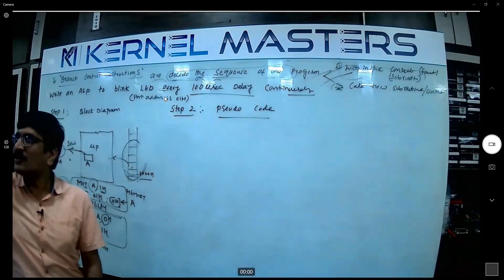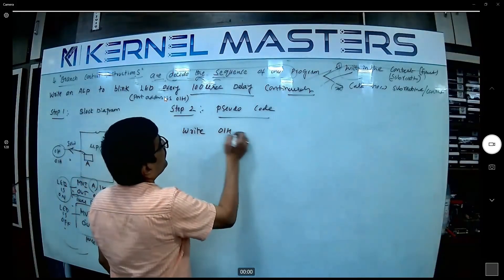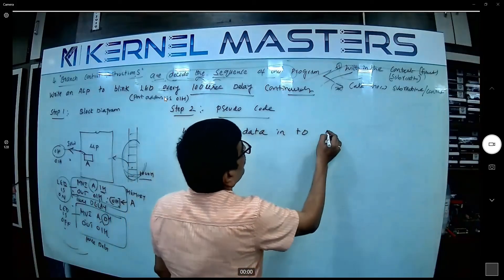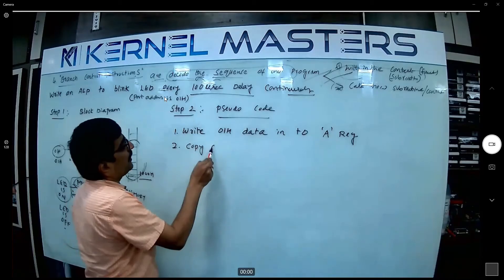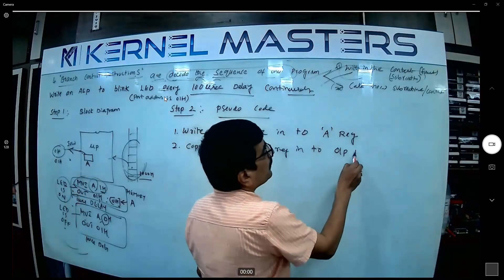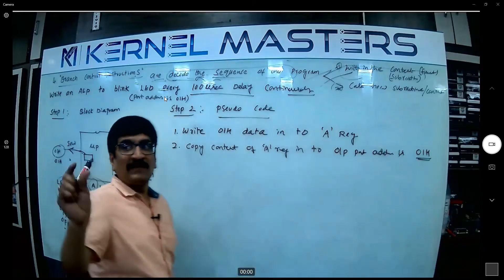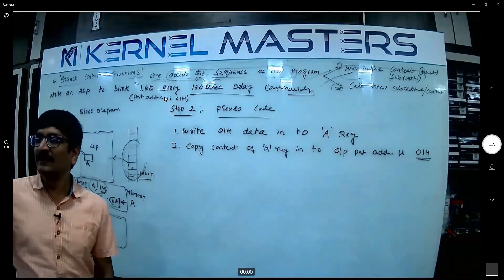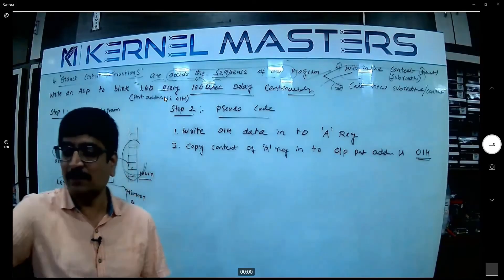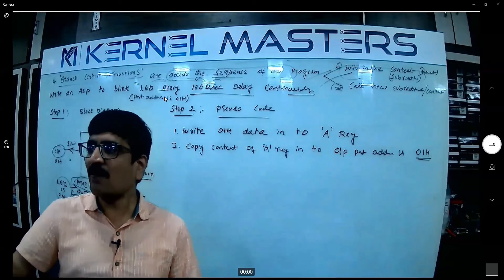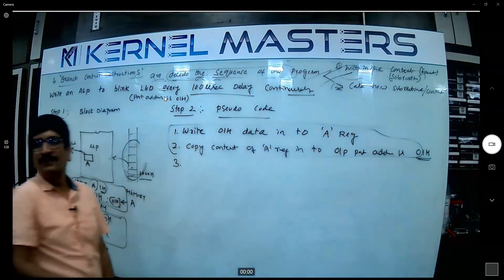Now the jump instruction — unconditional instruction. First, write 01H data into the A register. Next, copy the content of the A register into the output port. The output port address is 01H — that indicates the output device LED. Every device has some address. The programmer must know how to communicate with the device — printer, touch screen, Wi-Fi — every device has some address.